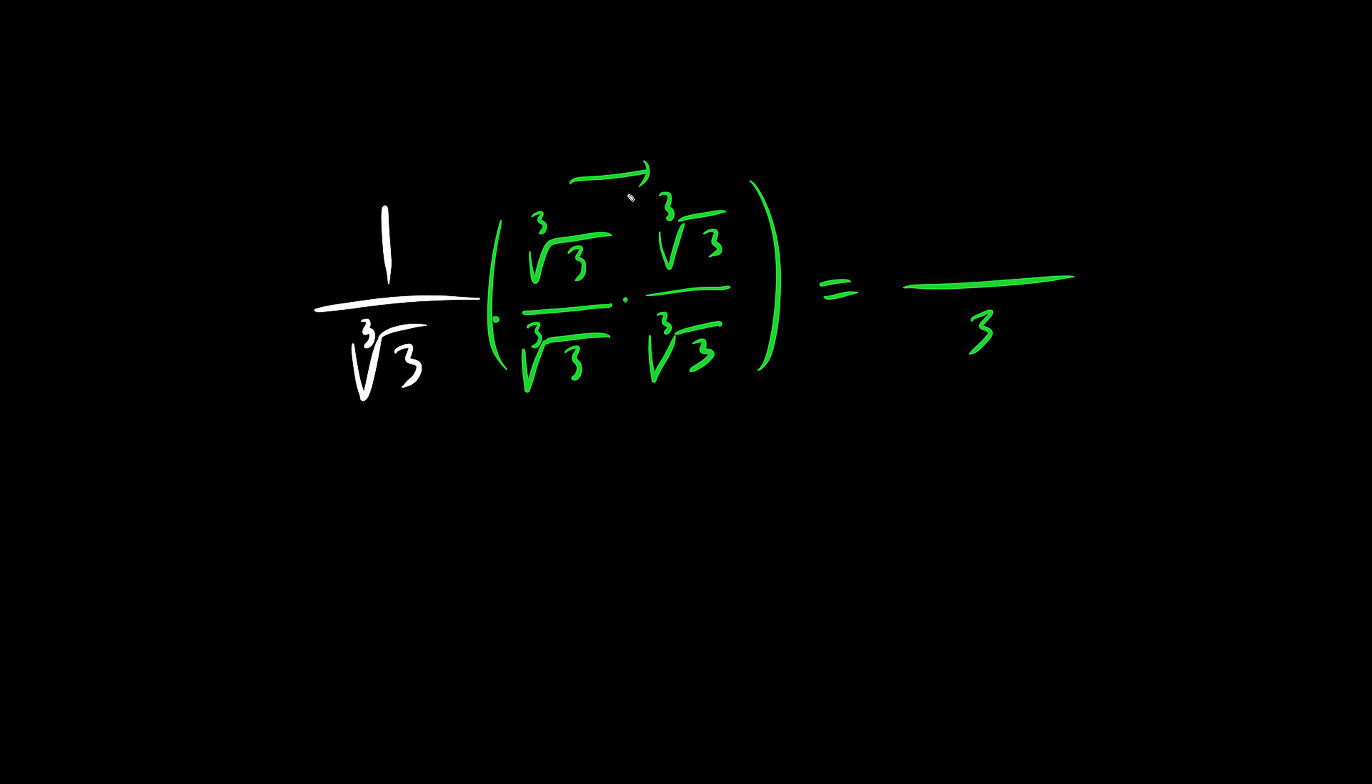And when you multiply the tops, we have the cube root, and you multiply the insides, it's 9. And this is rationalized.